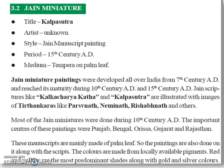The colors are made from locally available pigments; red and yellow are the most predominant shades, along with gold and silver colors. यह पांडुलिपियां प्रमुख रूप से पाम पत्रों पर लिखी गई थीं और इसलिए चित्र भी इन्हें पांडुलिपियों के साथ ही बनाए गए थे। चित्रों में आसपास में उपलब्ध रंगों से बनाए जाते थे। लाल तथा पीले रंगों का उपयोग विशेष रूप से किया जाता था और इन्हीं रंगों के साथ-साथ golden तथा silver कलर का प्रयोग किया जाता था।